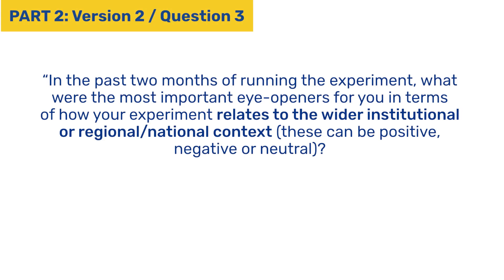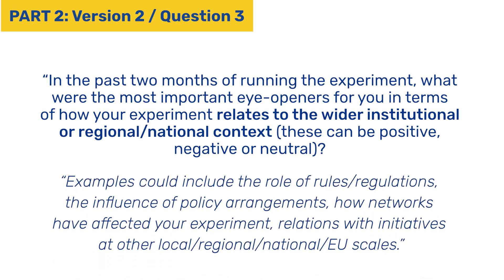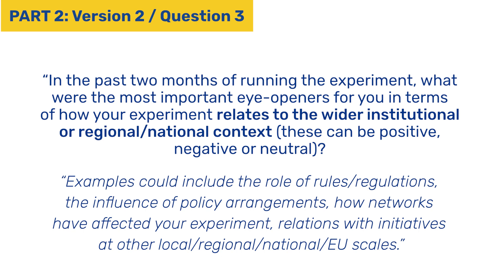The very final question in version two, part two of the monthly surveys is: in the past two months of running the experiment, what were the most important eye-openers for you in terms of how your experiment relates to wider institutional, regional or national contexts? These eye-openers can be positive, negative or neutral. One example response we received talked about how experiment stakeholders mentioned major constraints affecting the transition to a more circular approach. It would be so helpful to hear what those major constraints were in your response — please do include that.